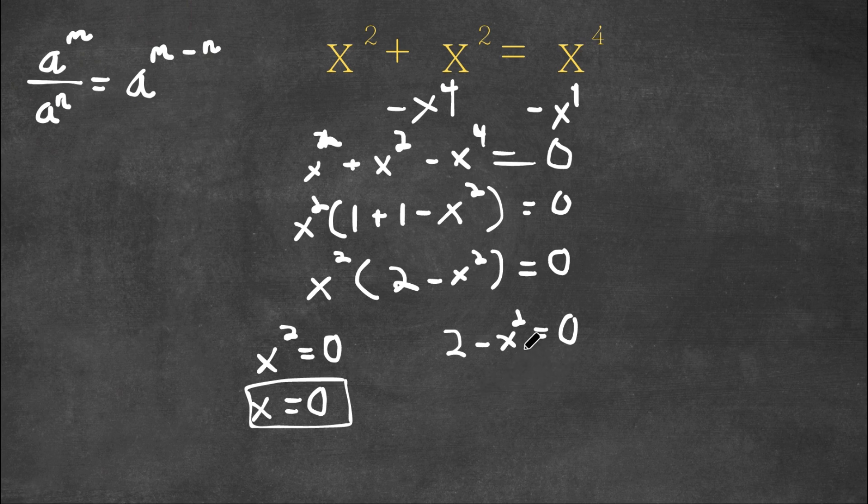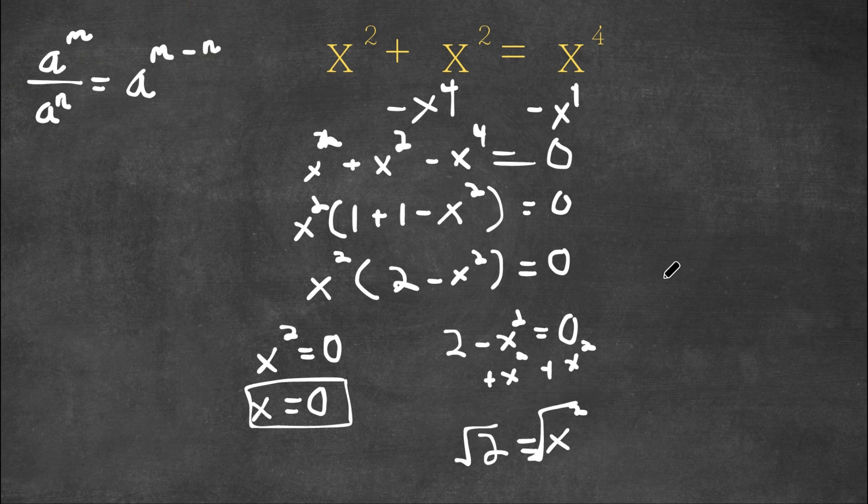Now for the second equation, I'm going to add x squared on both sides. So now we get 2 is equal to x squared. And now if I take the square root on both sides, I get plus or minus the square root of 2 is equal to x.